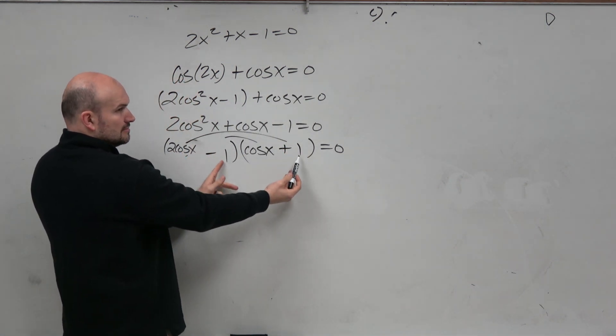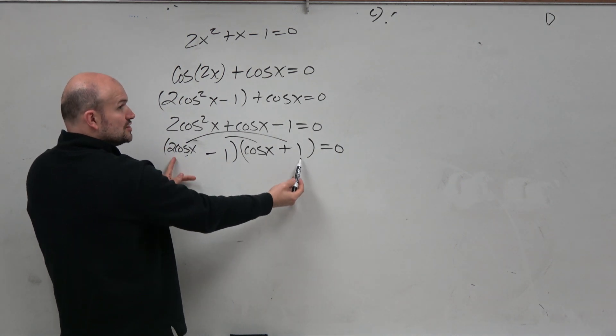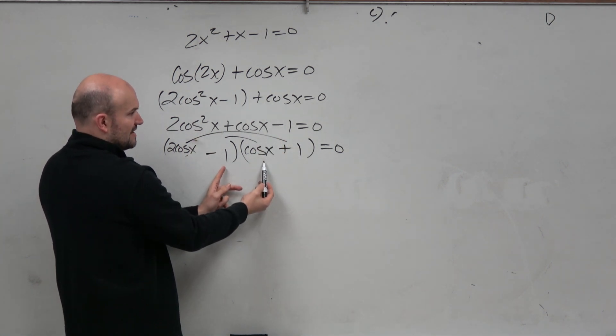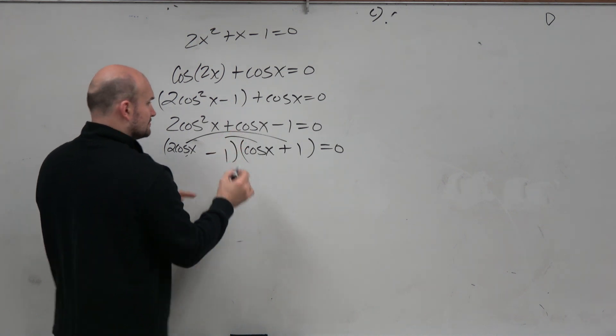Check my work: 2cosine squared, multiply those, that's negative 1. That's negative cosx. That's 2cosx. 2cosx plus negative cosx equals positive cosx. See how it works?